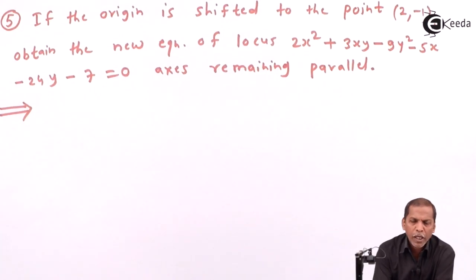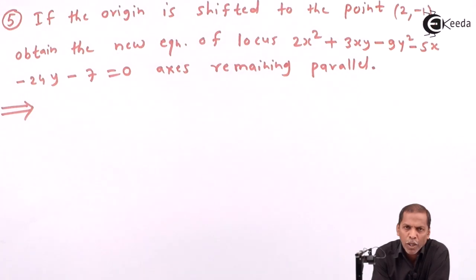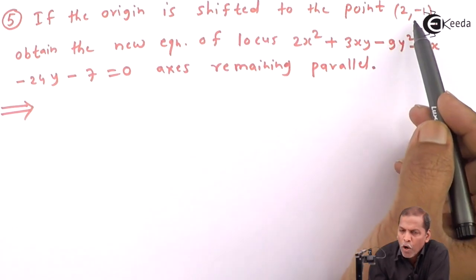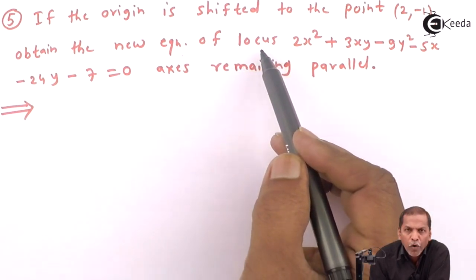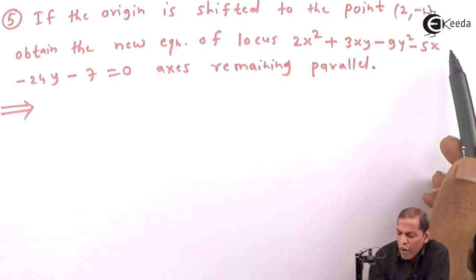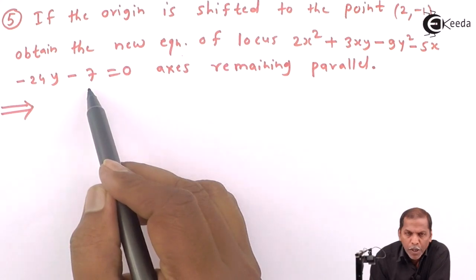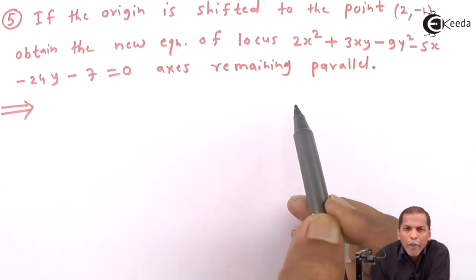Hello friends. Now we see problem number 5, which is based on shift of origin from the chapter Locus. The problem is: if the origin is shifted to the point (2, -1), obtain the new equation of locus 2x² + 3xy - 9y² - 5x - 24y - 7 = 0, with the axis remaining parallel.